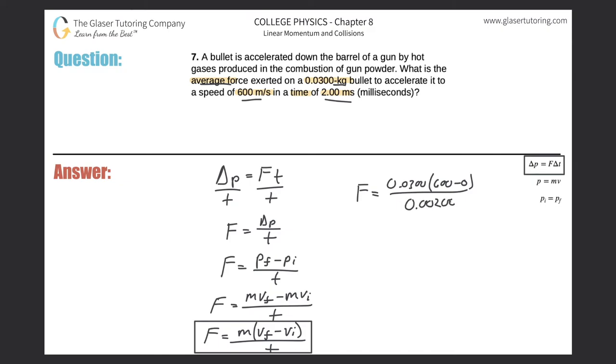Let's just calculate the force. It's going to be 0.03 times 600 divided by 0.002, and we get a value of 9000, so we have a value of 9.00 times 10 to the third, and that's in terms of newtons. Notice it's positive and that should make sense.